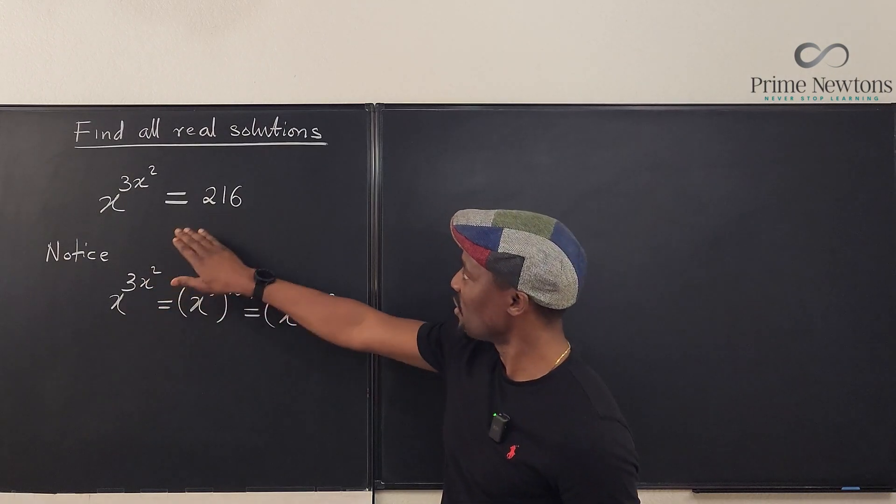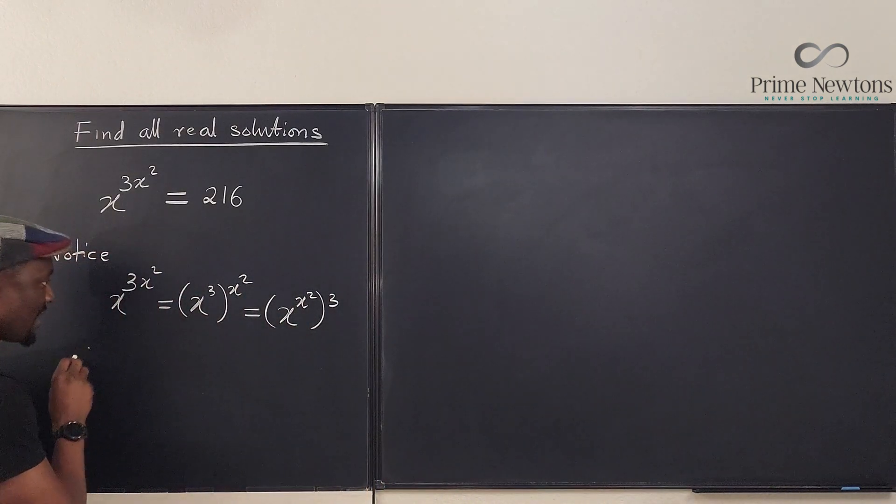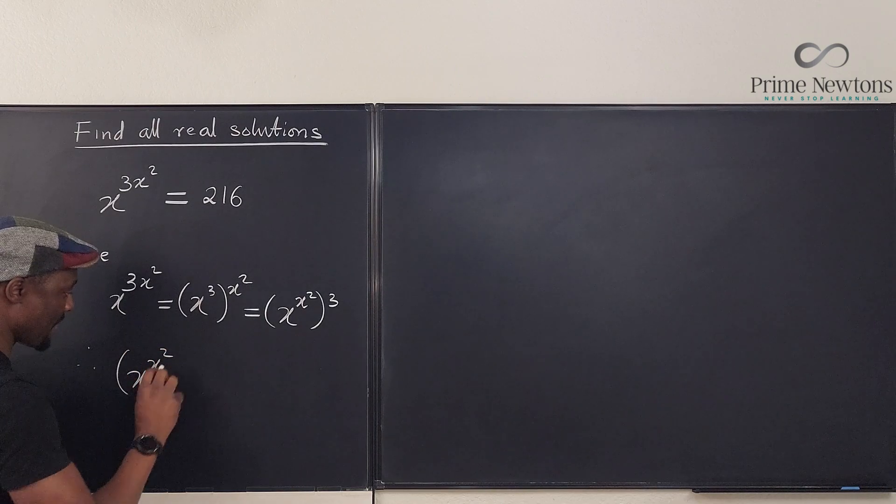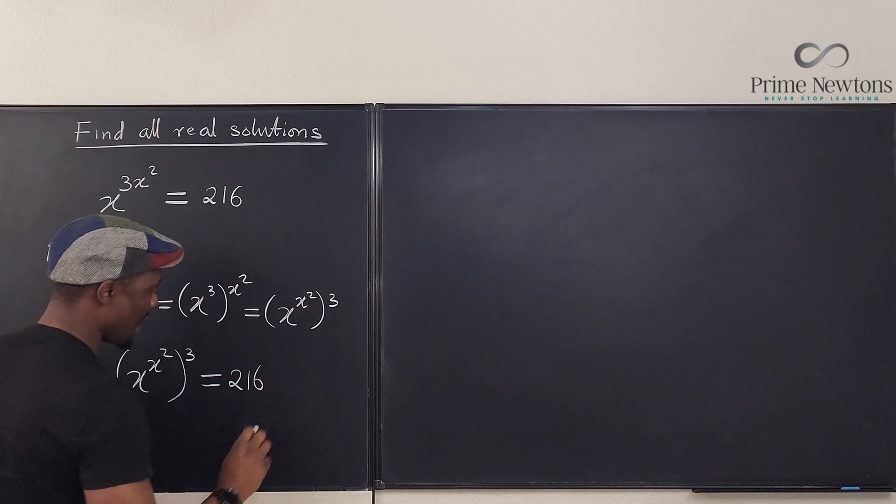So what do I do here? I'm going to use this form and say, therefore, x to the x² raised to power 3 equals 216.